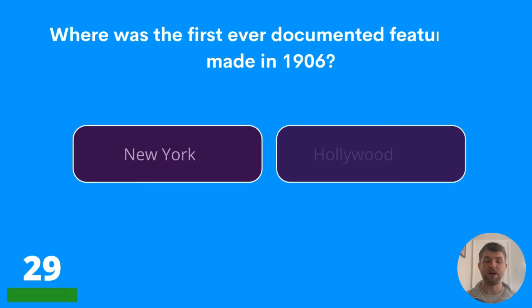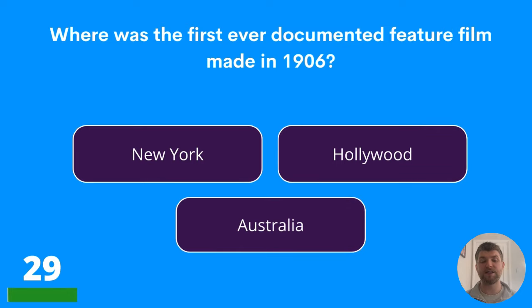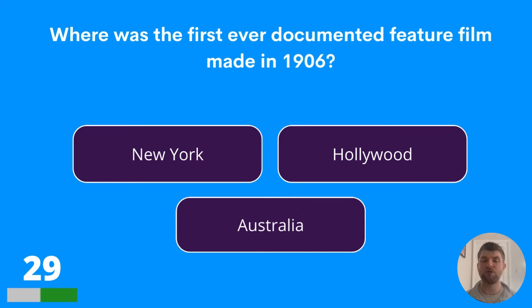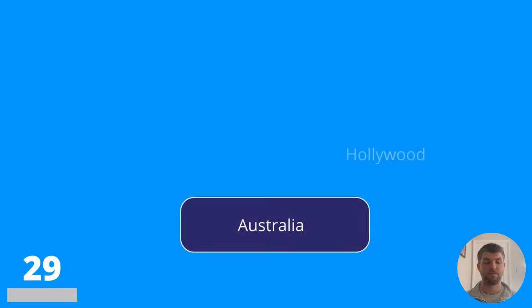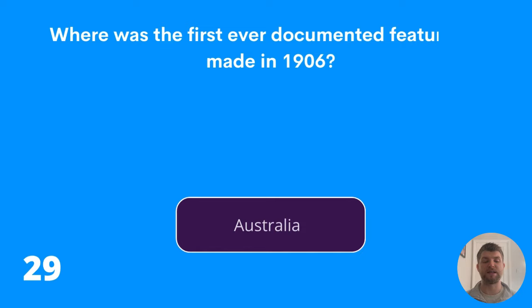Question twenty-nine: where was the first ever documented feature film made in 1906? New York, Hollywood, or Australia? The answer is Australia.